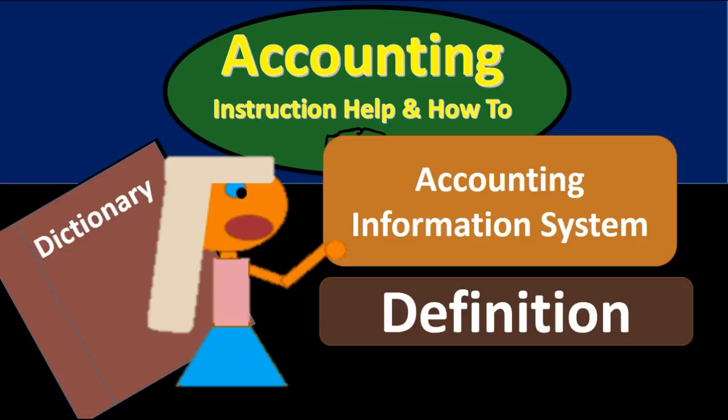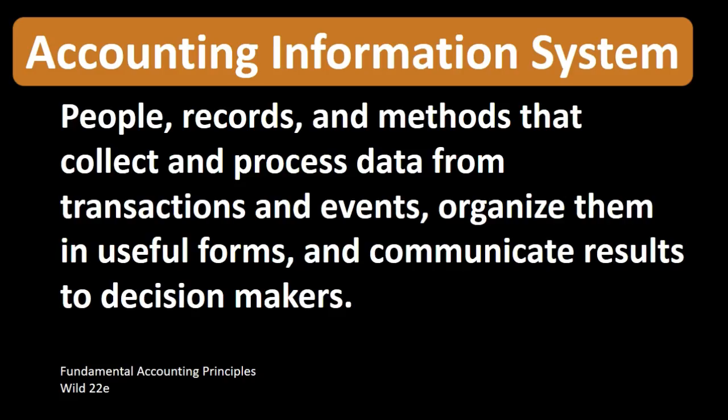Hello. In this lecture we're going to define accounting information system. According to Fundamental Accounting Principles, 22nd edition, the definition of an accounting information system is people, records, and methods that collect and process data from transactions and events, organize them in useful forms, and communicate results to decision makers.